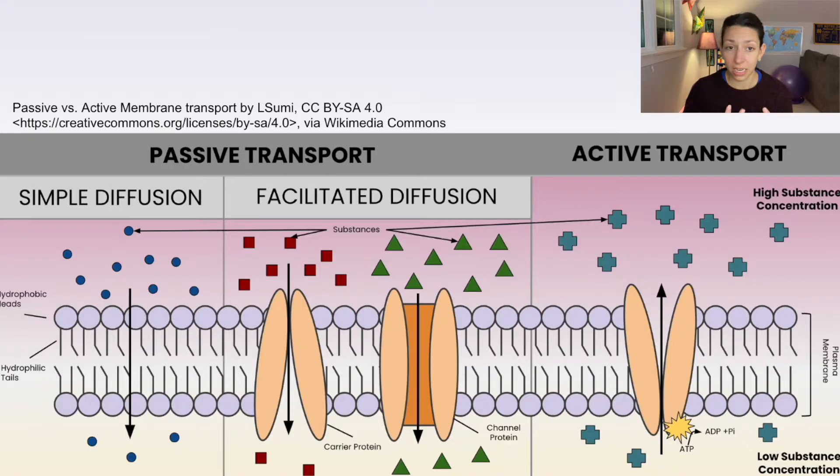Now there's also facilitated diffusion, which often occurs with larger molecules or molecules that aren't able to interact with the cell membrane because of their charge. And they will also go from a high concentration to a low concentration, high outside the cell, lower inside the cell, or vice versa. And no energy will be needed for this process, but they'll use these either carrier or channel proteins to get inside the cell. Again, both of these are passive transport.